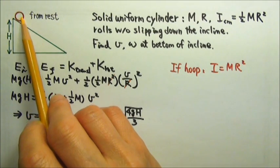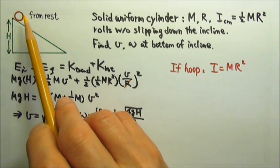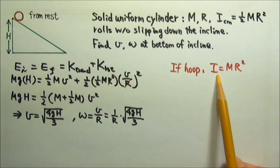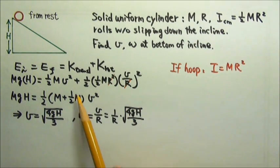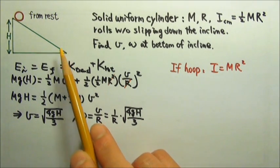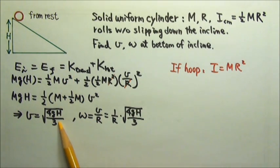with all the mass concentrated on the outer rim, more mass farther away from the axis, the rotational inertia is bigger, then this number here will be bigger. That means at the bottom of the incline, the speed will end up being smaller.